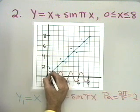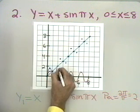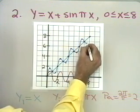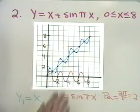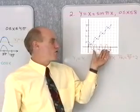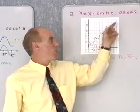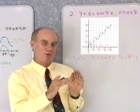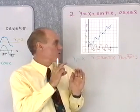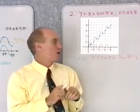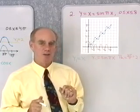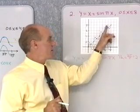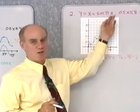Now let me connect these points with a smooth curve. I get something that looks like a distorted sine curve that winds around the line y equal to x. What I want to do next is take the graphing calculator and confirm that this hand-drawn graph is approximately correct.